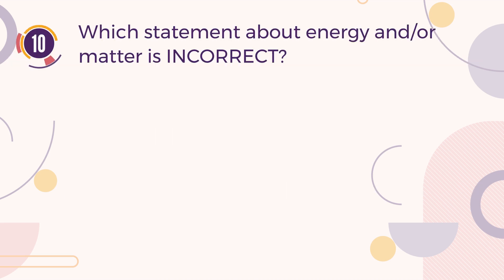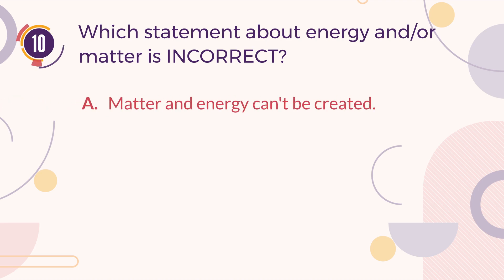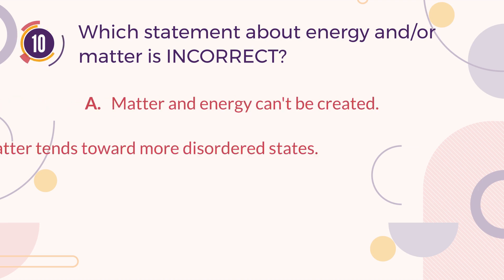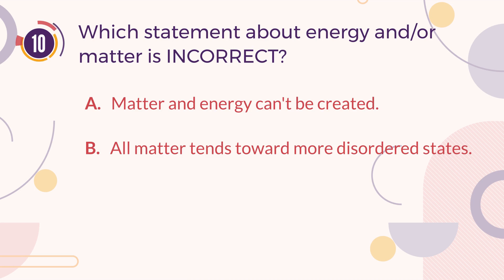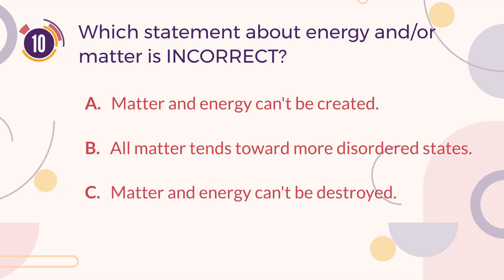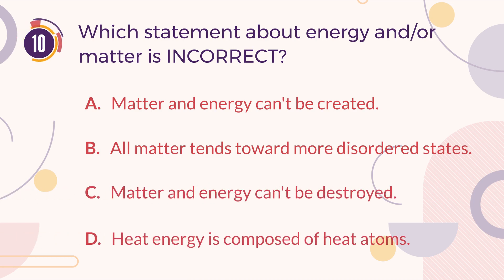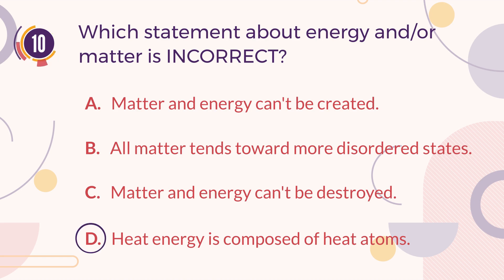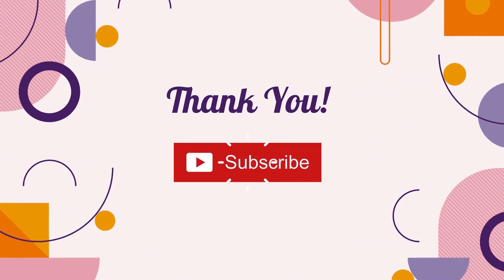Number 10. Which statement about energy and/or matter is incorrect? A. Matter and energy can't be created. B. All matter tends toward more disordered states. C. Matter and energy can't be destroyed. D. Heat energy is composed of heat atoms. The correct answer is D. Heat energy is composed of heat atoms.